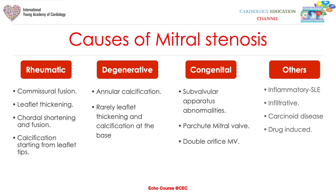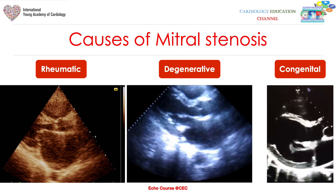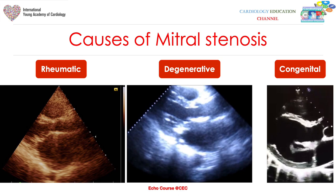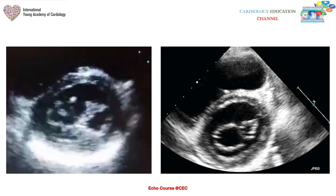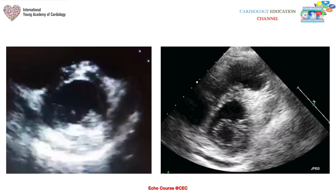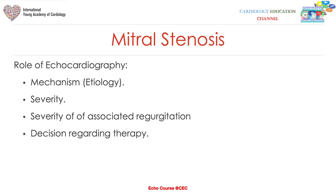There are some other rare causes of mitral stenosis, like inflammatory causes such as SLE, infiltrative diseases, carcinoid disease if it extends to affect left-sided valves, or drug-induced causes. These images show examples: on the left is the typical rheumatic affection, in the middle is the degenerative type, and on the right is the congenital parachute mitral valve and double orifice mitral valve.